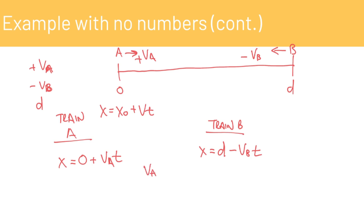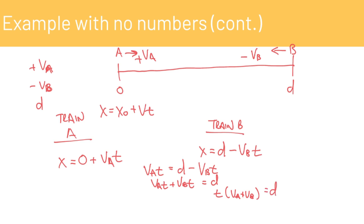Setting the equations equal: V_A times T equals D minus V_B times T. Moving V_B·T to the left side: V_A·T plus V_B·T equals D. Factoring out T: T times (V_A plus V_B) equals D. Therefore T equals D over (V_A plus V_B), which is exactly the expression we were looking for.